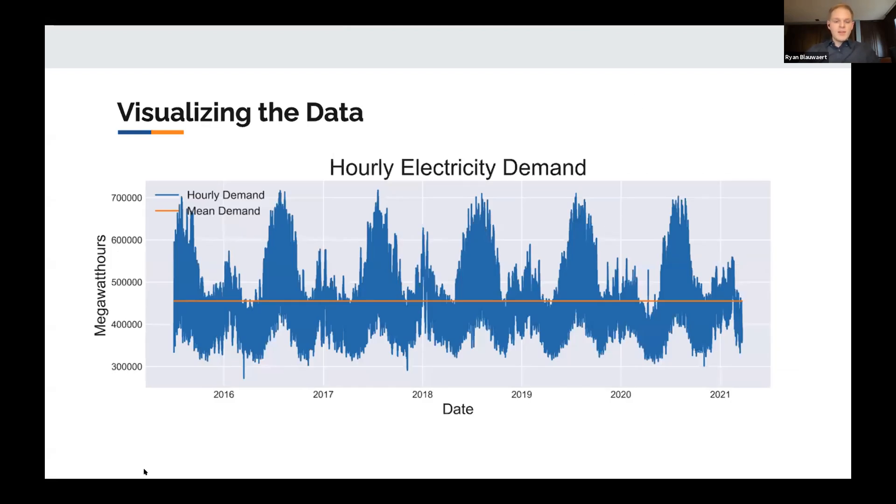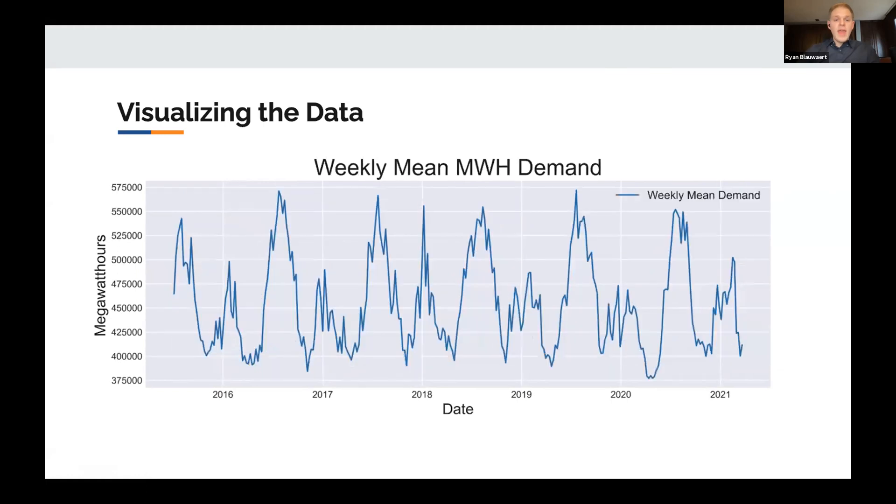Taking a look at the data graphically, you can see in blue these are the actual hourly energy demands, and then in orange we have that mean demand cutting across it. When we aggregate week by week, you can pick up on these trends that we're seeing. We see a big spike in the summer and then a smaller spike in the winter.